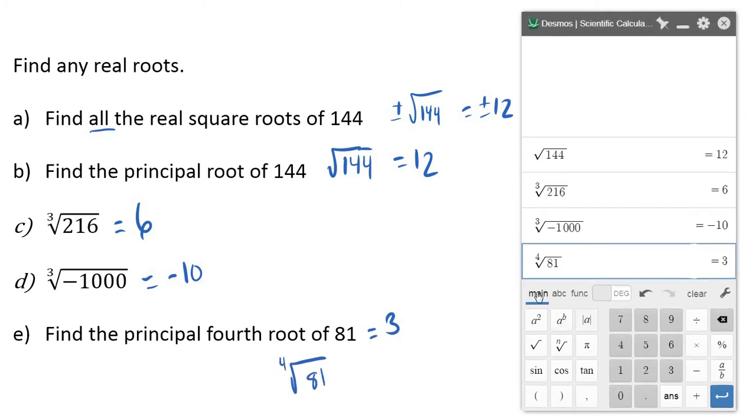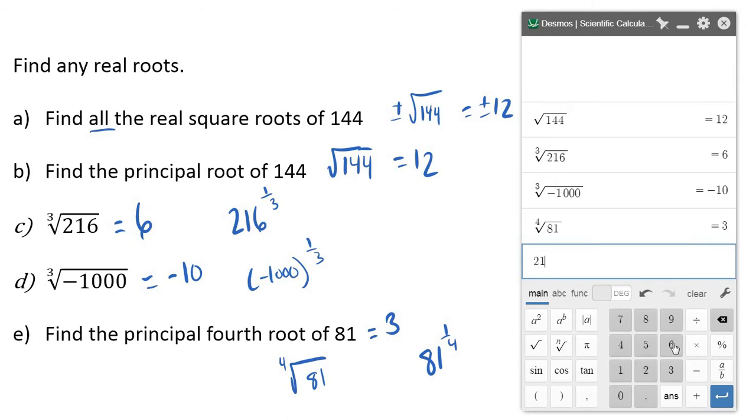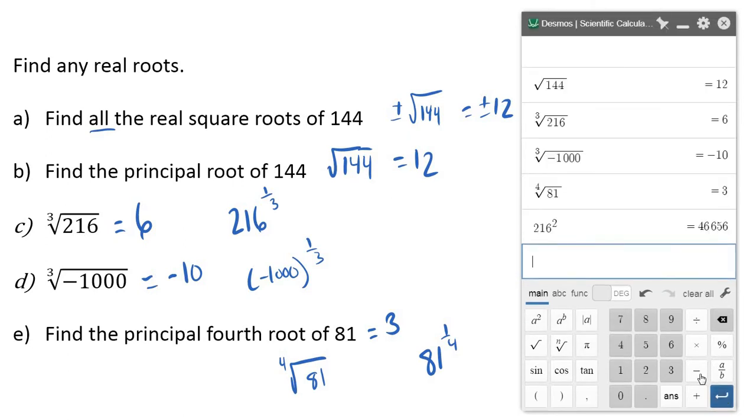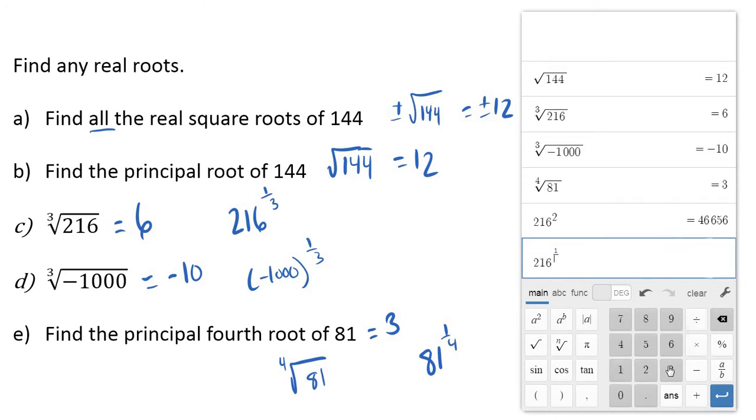Now, depending on your calculator, Desmos is great. If you've got a scientific calculator or a graphing calculator you're familiar with, another way you could type this in is you could do 216 to the one-third power, negative 1,000 to the one-third power, 81 to the one-fourth power. Let me just illustrate that real quick. So 216, and let's go ahead and do an exponent here. Let's do 216 to the B power. Then it'll let me type it in. And we want to do one-third power. So notice I'm just going to type one-third like that. Six. Same thing there.